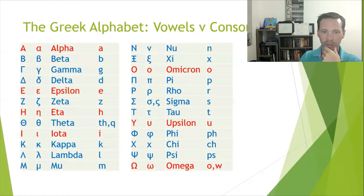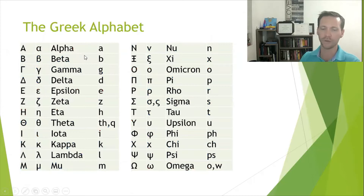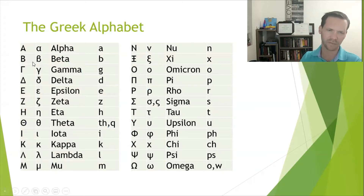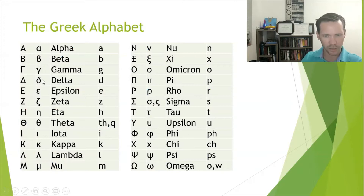Let me walk through each individual letter. Alpha — capital A is easy. Beta — the lowercase beta just looks like a lowercase b; beta says 'b.' You know gamma already — it says 'g,' with the capital gamma looking kind of like an upside-down L. Delta says 'd' — the lowercase looks a bit like a B with a squiggle to the right, and the capital delta is just a triangle, like the math symbol.